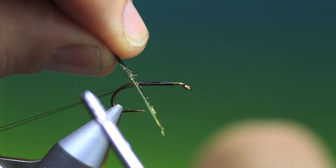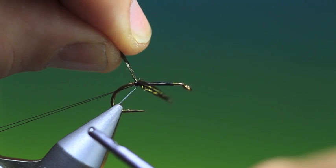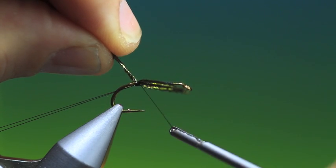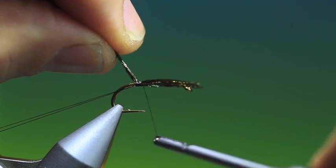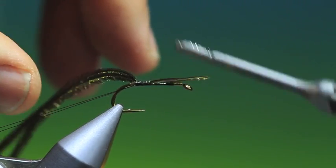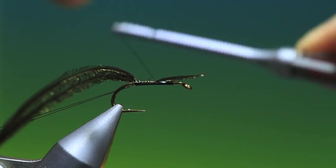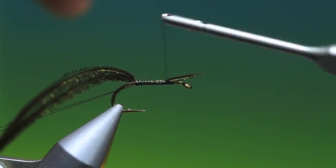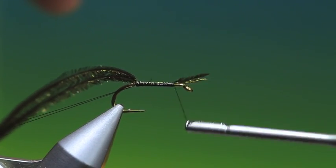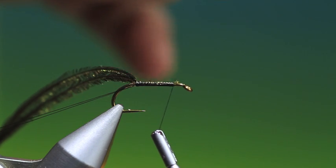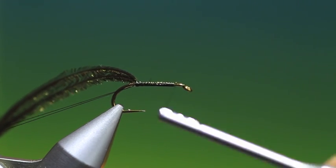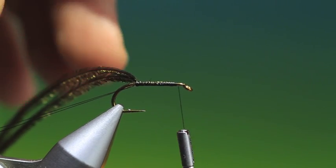Like so. Turn that around. There we are. So we tie that in there. Right in to the tag. I'll just secure this down the hook shank. Leave enough so you can get hold of it and pull it off. And go forward.